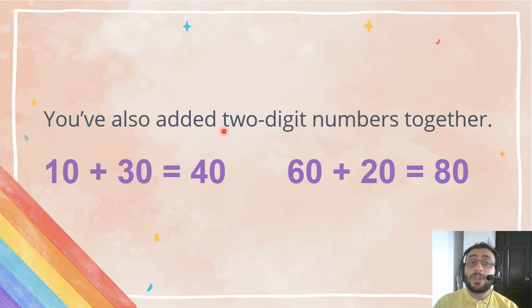You have also added two digit numbers together. Ten plus thirty, which equals to forty. Sixty plus twenty, which equals to eighty. See, two-digit numbers, two-digit numbers added together. You already learned about this.